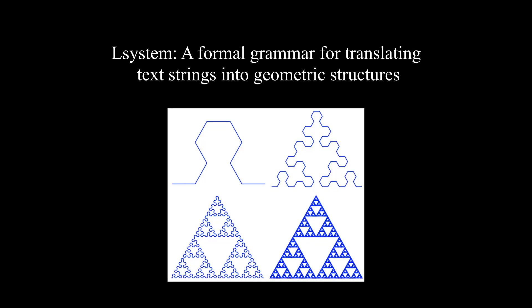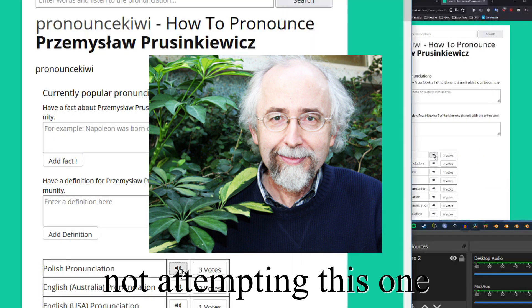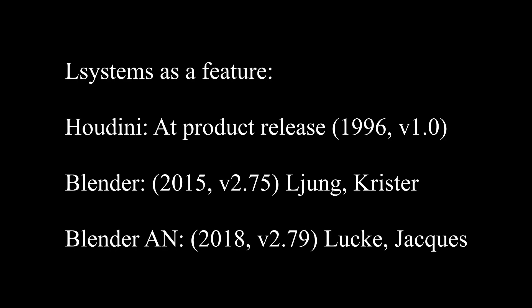First, some background on the technique. Wikipedia describes L-systems as a formal grammar for translating strings into geometric structures, or vice versa. They were developed in 1968 by Aristide Lindenmeyer, a Hungarian theoretical biologist and professor at the University of Utrecht. Later, the idea was expanded by Polish computer scientist Przemysław Prusinkiewicz to include higher branching structures such as plants. They were introduced to Blender in 2018 by Animation Nodes creator Jacques Luc, and documented in a series of video tutorials.